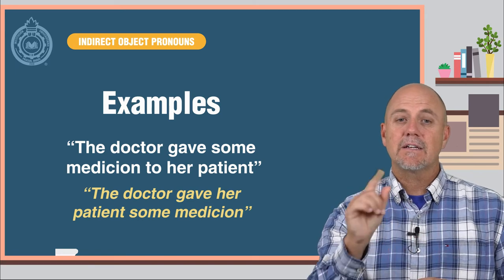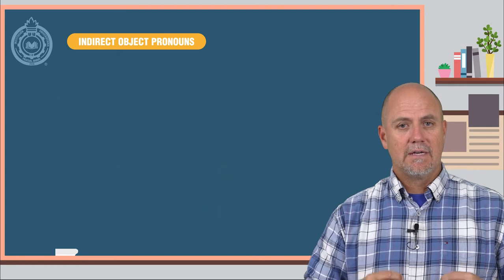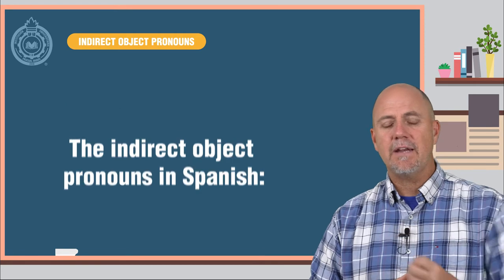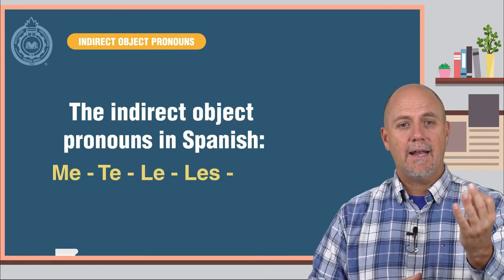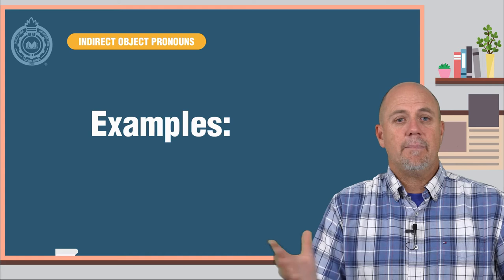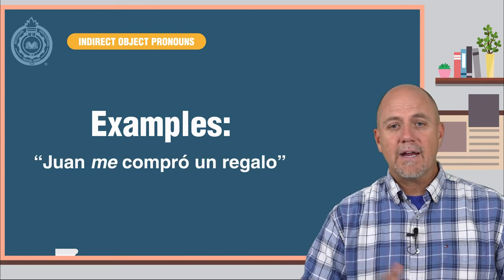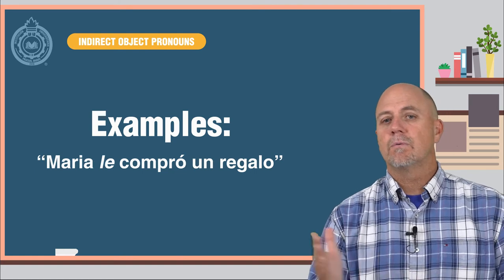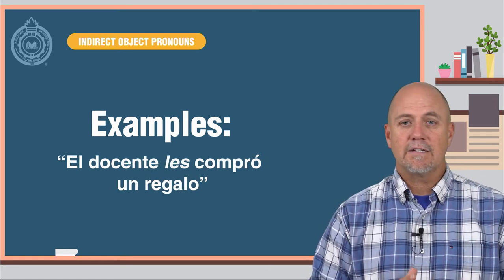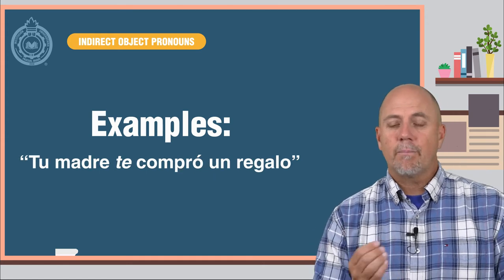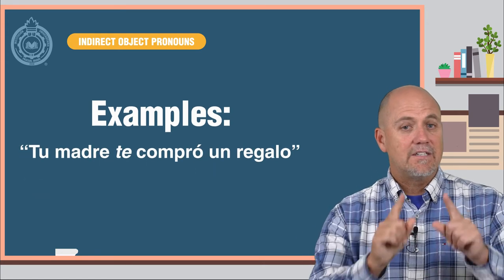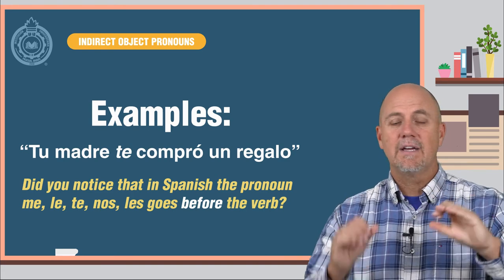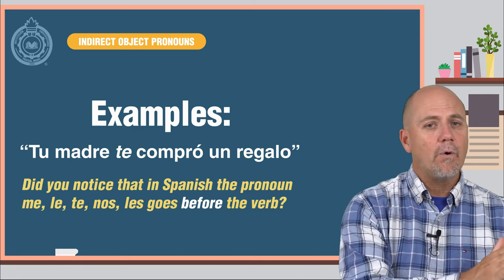Now, the indirect object pronouns. Let's start with what you already know — the indirect object pronouns in Spanish: me, te, le, les, and nos. Here are some examples. Juan me compró un regalo. Susie nos compró un regalo. Maria le compró un regalo. El docente les compró un regalo. Tu madre te compró un regalo. Did you notice that in Spanish, the pronouns me, le, te, nos, les go before the verb?